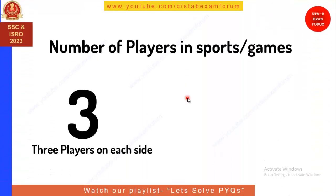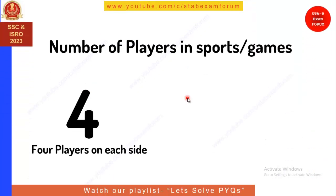Moving to three players on each side — there is no sport with three players on each side. Quickly moving to four players on each side: this is very important and has been asked in DRDO exams. The answer is polo. Polo has four players on each side.